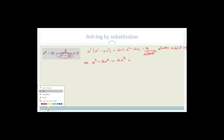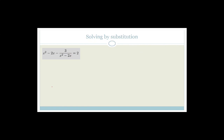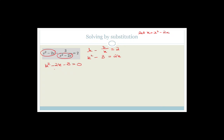What we're going to do instead is called k-substitution. We're going to let k equal x squared minus 2x. If we do that, we have k minus 3 over k is equal to 2. That is much more doable. I still need to get rid of the denominator, but if I do that, it becomes k squared minus 3 equals 2k, which rearranges to k squared minus 2k minus 3 equals 0.